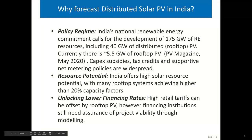Why forecast distributed PV in India? The situation is really friendly for distributed PV for three main reasons. First, there's a great policy regime: the national renewable energy target of 175 gigawatts has a carve-out of 40 gigawatts for distributed rooftop PV. Currently only about 5.5 gigawatts of that 40 gigawatt target has been met, but there are still tremendous subsidies, tax credits, and supportive net metering policies widely available — unlike the US or Europe where net metering is starting to phase out.